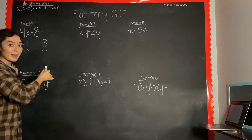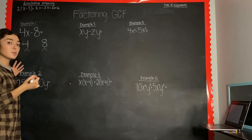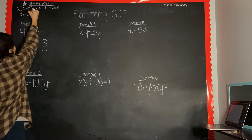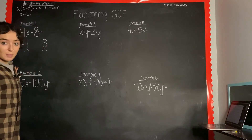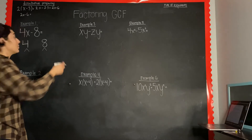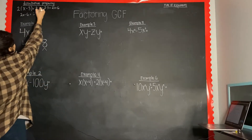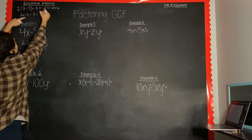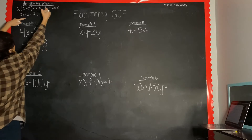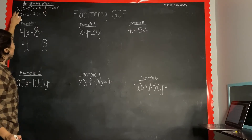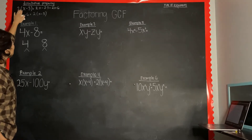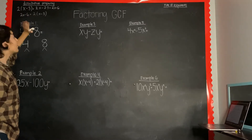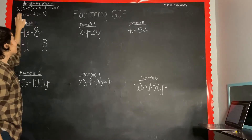Now in the case of factoring the greatest common factor, we're going to be given an expression like 2x minus 6 and told to factor the greatest common factor. In this case it's 2, so we divide: 2x divided by 2 is x, minus 6 divided by 2 is 3. In the distributive property we multiply the outside number by every term; when factoring the GCF we divide the greatest common factor out of every term.